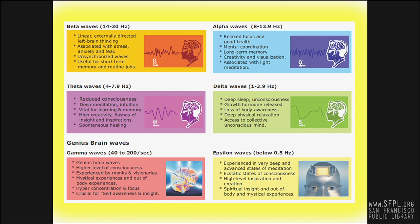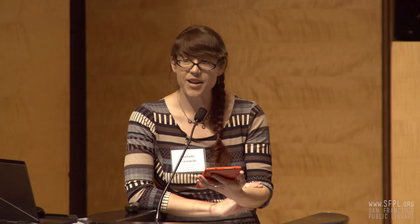Gamma is the fastest brainwave frequency, with a range between 40 and 200 hertz. These occur when different brain regions fire in harmony, such as in moments of insight. Gamma is also associated with peak concentration and high levels of cognitive functioning. Neuroscientists believe that gamma waves link information from all parts of the brain together, causing the brain to work most efficiently.